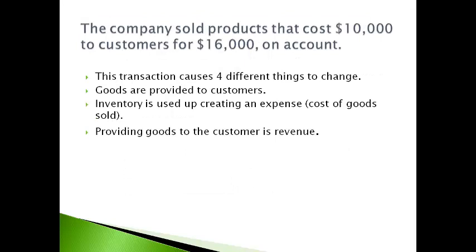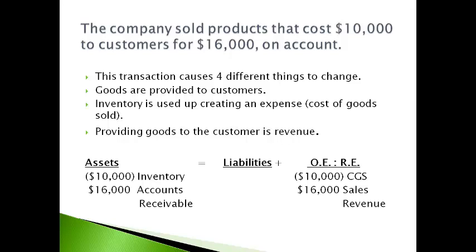The company sold products that cost $10,000 to customers for $16,000 on account. Selling goods to customers is a four-part transaction. The goods provided to customers is sales revenue, and this is exchanged for accounts receivable — on account means no cash. The inventory provided to customers decreases, and using an asset creates an expense: cost of goods sold. One asset is exchanged for another of greater value. The higher sales revenue than expense creates a profit, and profits go to the owners as part of retained earnings, which increases owner's equity. The accounting equation stays in balance.